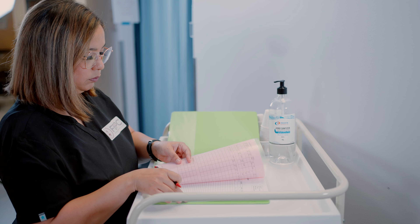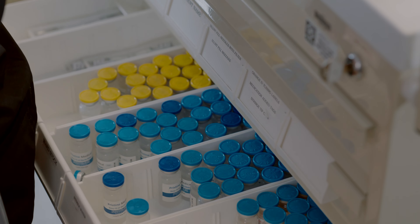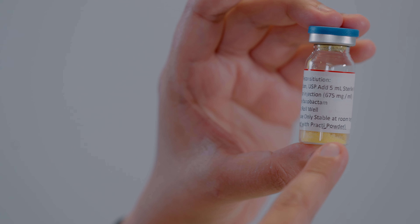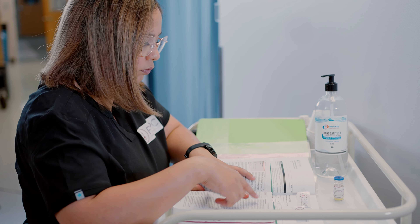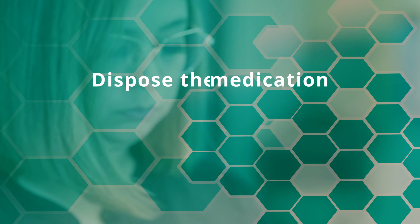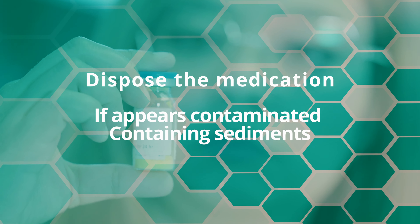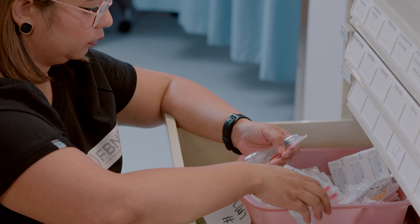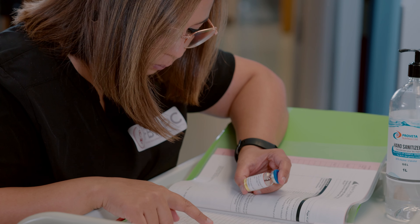Perform dosage calculation to match the orders and confirm your answer with the provider if necessary. Dispense the medication in a well-lit, quiet area. Compare the order with the label on the vial to confirm you have the right drug for the right patient. Check the quality of the medication and the expiration date — dispose of the medication if it appears contaminated, contains sediments, or has expired. Choose the correct syringe and needle based on the administration site, the patient's characteristics, and the amount of medication to be injected.